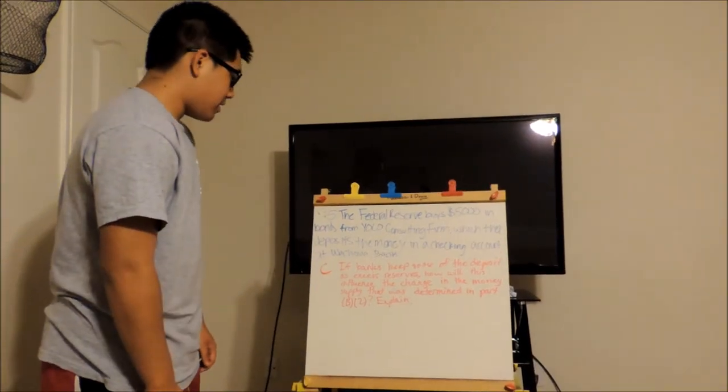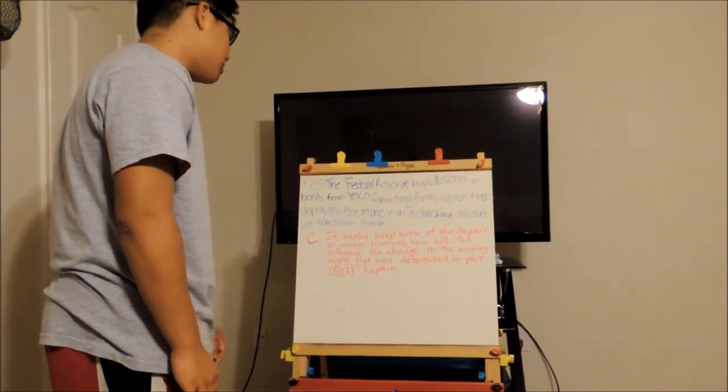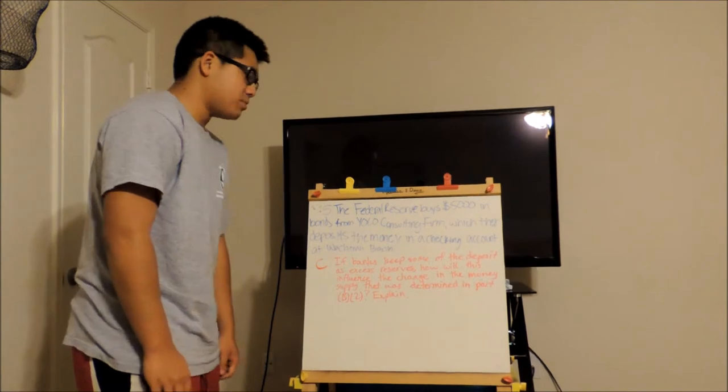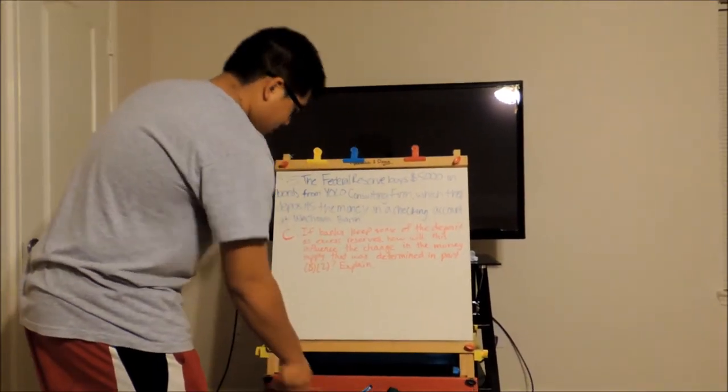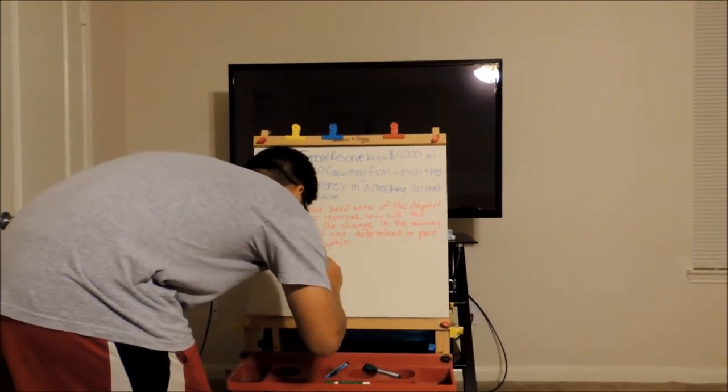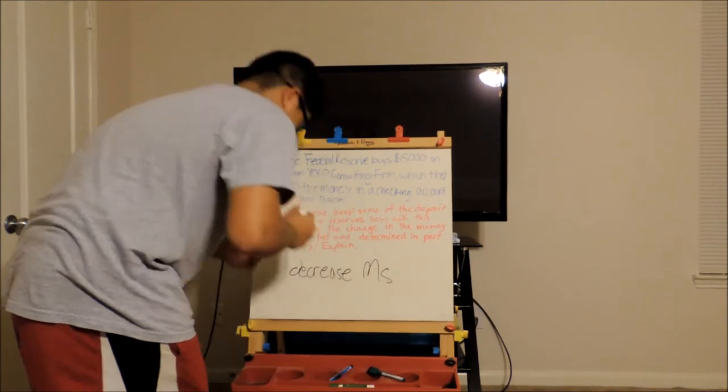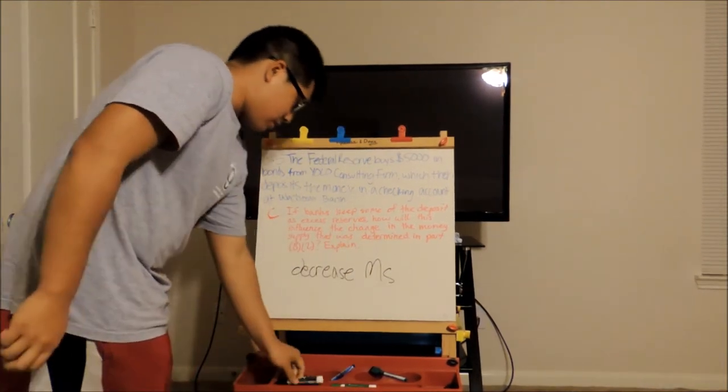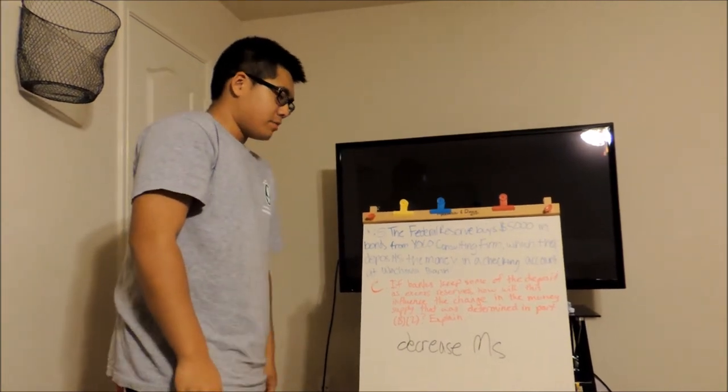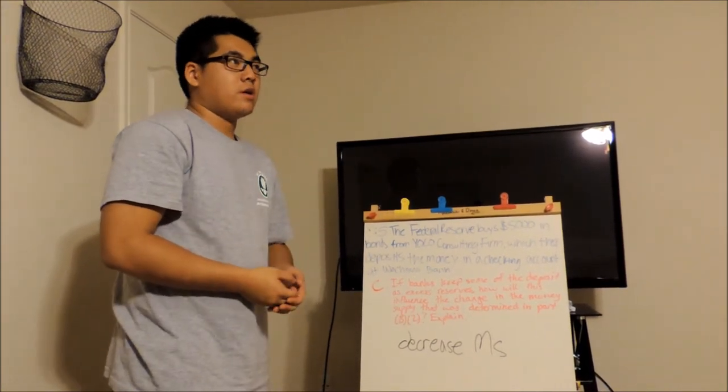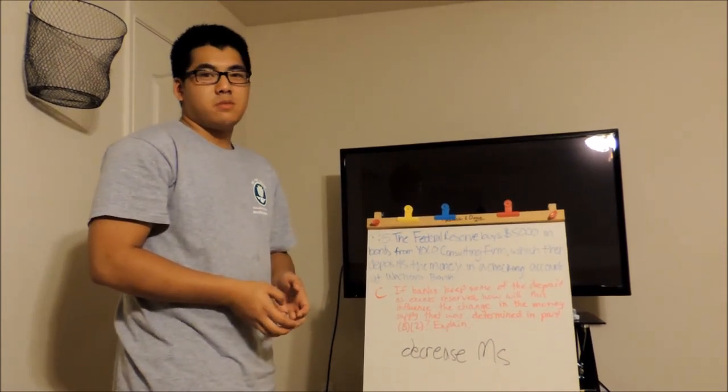And C: if banks keep some of the deposits as excess reserves, how would this influence the change in the money supply that was determined in part B? It will decrease the money supply. The reason why is because you're not using all your excess reserves, therefore you're not making new loans, and you're decreasing your maximum money multiplier.